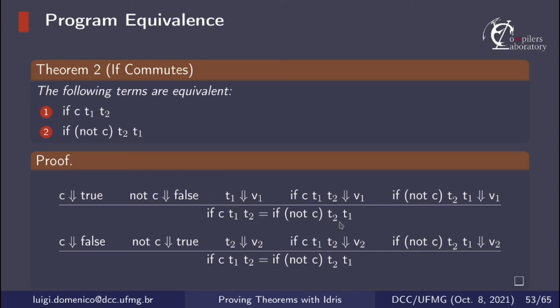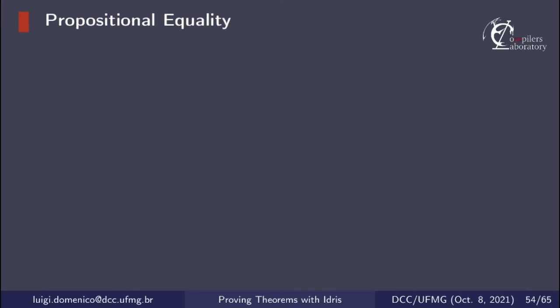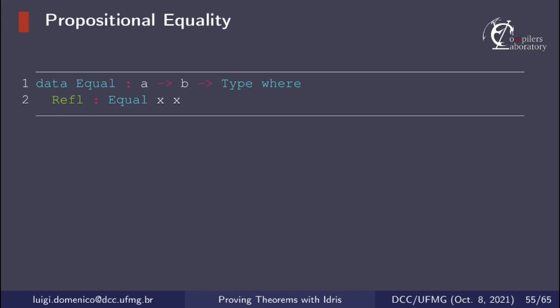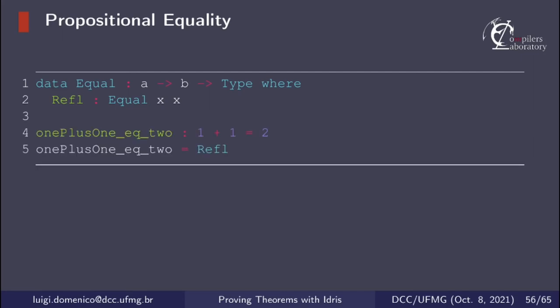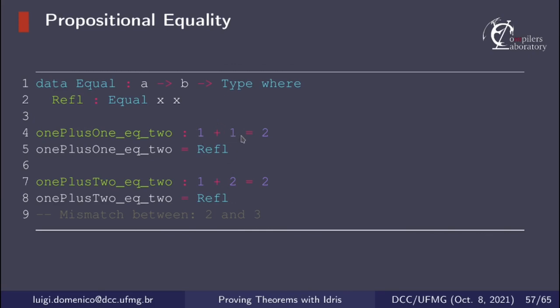To prove this we are going to use equality. In Idris, equality is defined as the type Equal, which has one constructor Refl that stands for reflexivity, and we can use this to show propositional equality. We can define a function showing that 1 plus 1 equals 2: 1 plus 1 normalizes to 2, so we have 2 equals 2, which is x equals x. Although the type 1 plus 2 equals 2 is syntactically valid, we cannot prove it because it does not type-check — 1 plus 2 normalizes to 3, giving a mismatch between 2 and 3.